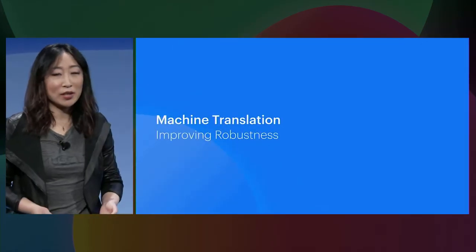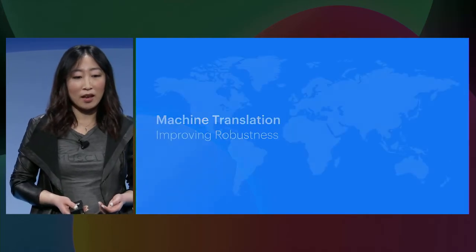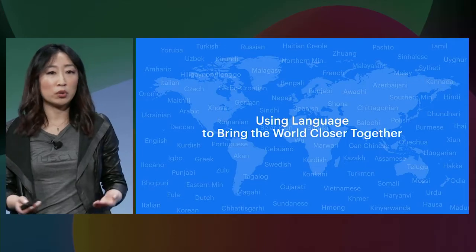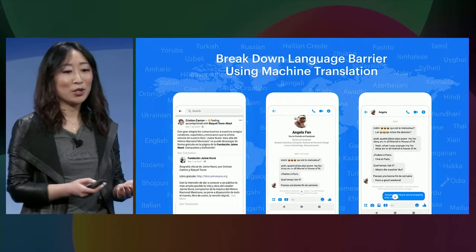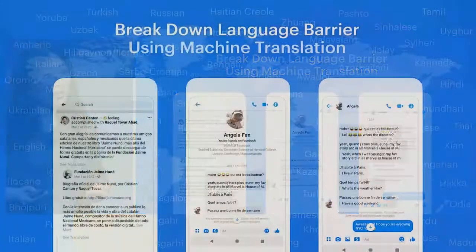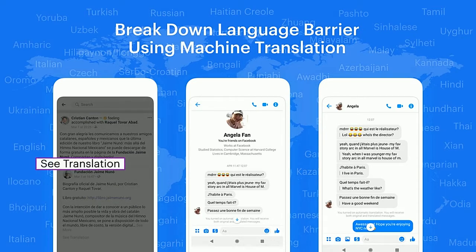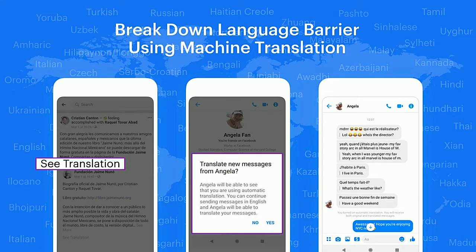Let's start with machine translation, where we improve the robustness of models to better handle language used in conversation. At Facebook, our mission is to give people the power to build community and bring the world closer together. One way we accomplish this is by breaking language barriers using machine translation. This mission particularly resonated with me because I have friends on Facebook who speak multiple languages — I'm sure you do as well.